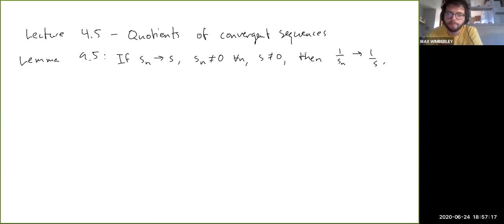So we have to exploit the fact that the limit is not equal to 0, which lets us put a lower bound. There's a limit to how small these things can get. Sn can't become arbitrarily small because it has to be approaching a non-zero number. So we have to put a lower bound on the absolute values of Sn, and that will let us control how big these errors get.